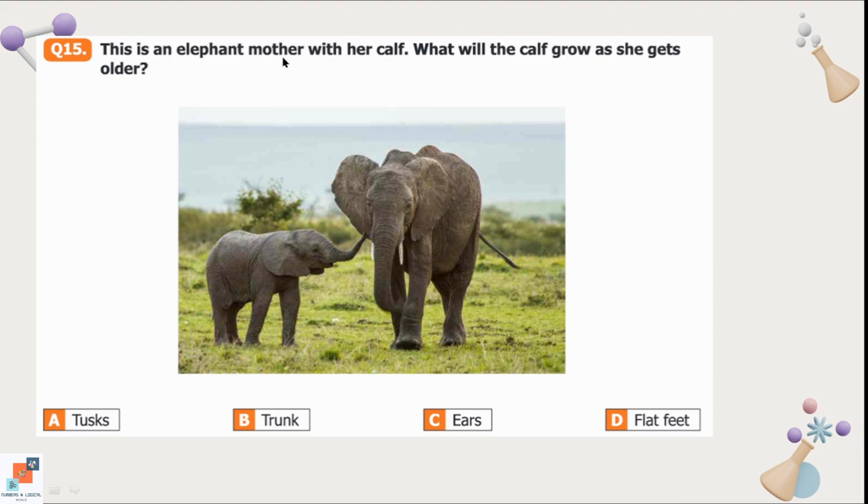Question number 15: This is an elephant mother with her calf. What will the calf grow as she gets older? Option A is tusks. Tusks are these long white teeth. Option B is trunk. Trunk is the long nose. C is ears. And option D is flat feet. We can see the baby has trunk, ears and flat feet already. But when that calf will grow up, it will grow the tusks. So option A is the correct option.